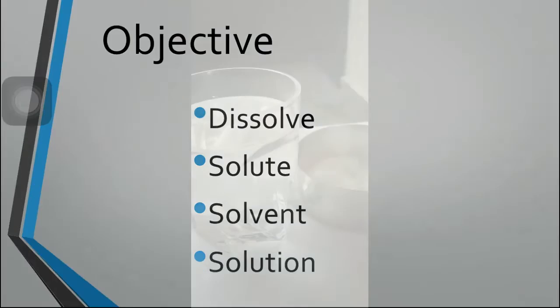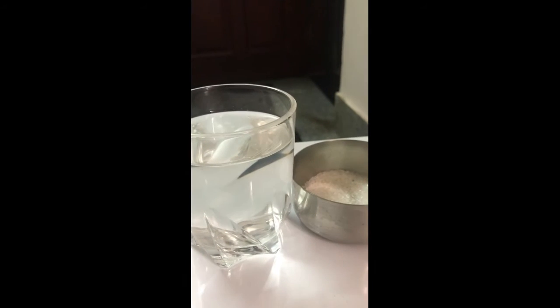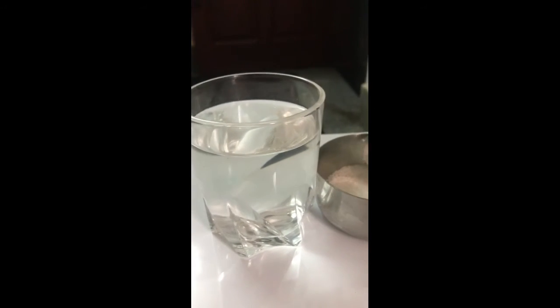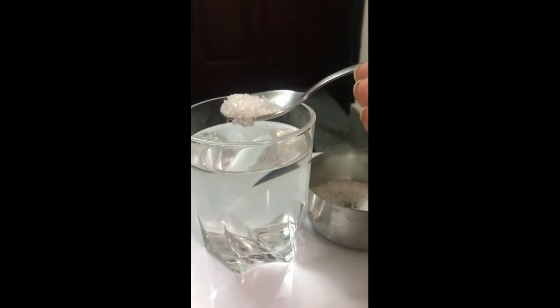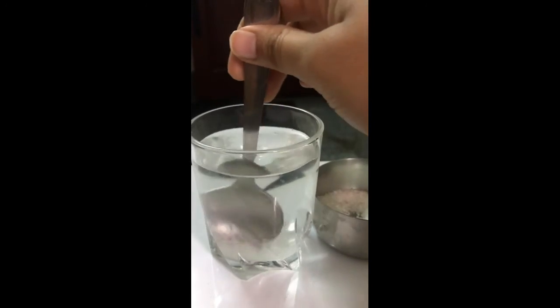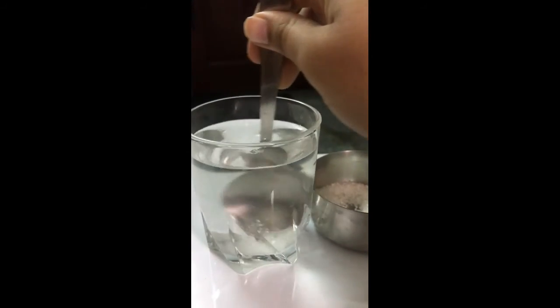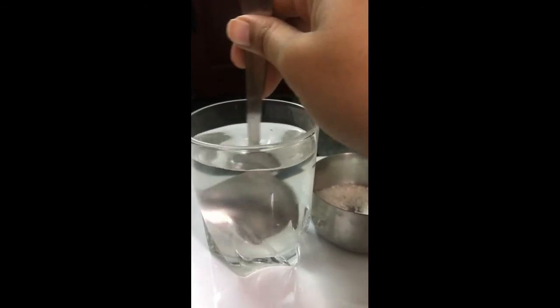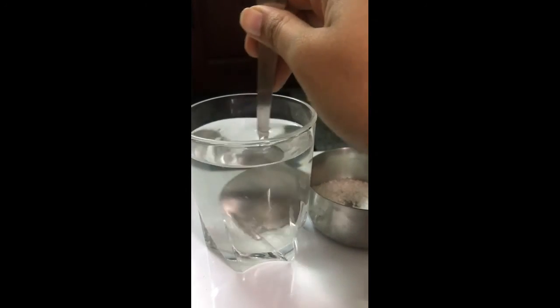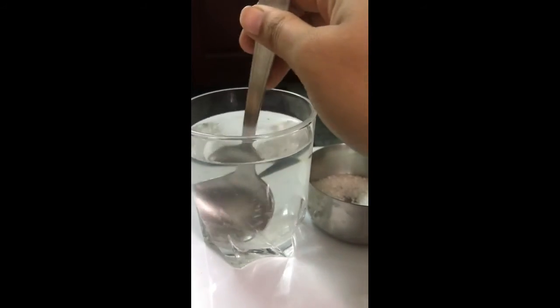So students, we are going to perform an activity. I have taken a bit of sugar and a glass of water. Now I will take a spoon of sugar and mix it inside the water and stir it for two to three minutes. Now let us see what happens.